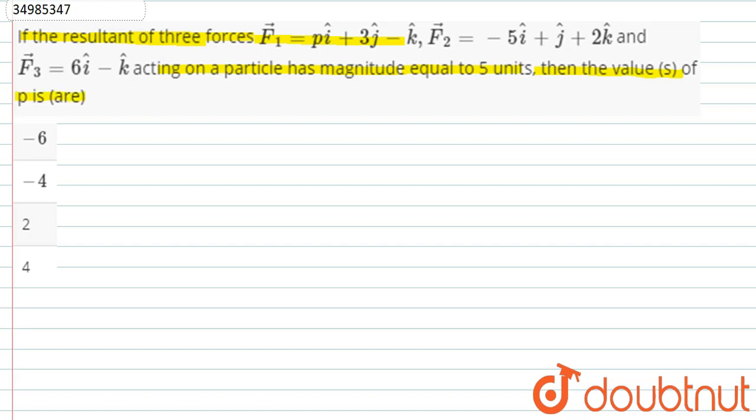If you see here, the magnitude is 5. What do we do? The whole force is equal to F1 vector plus F2 vector plus F3 vector.